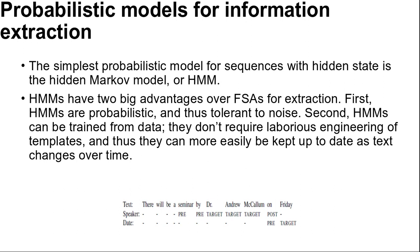We will use the second option: a separate HMM for each attribute. The observations are the words of the text and the hidden states represent whether we are in the target, prefix, or postfix part of the attribute template, or in the background — not part of a template. Here is a brief text and the most probable path through the text for two HMMs: one trained to recognize the speaker in a talk announcement and one trained to recognize dates. The dashes indicate a background state.